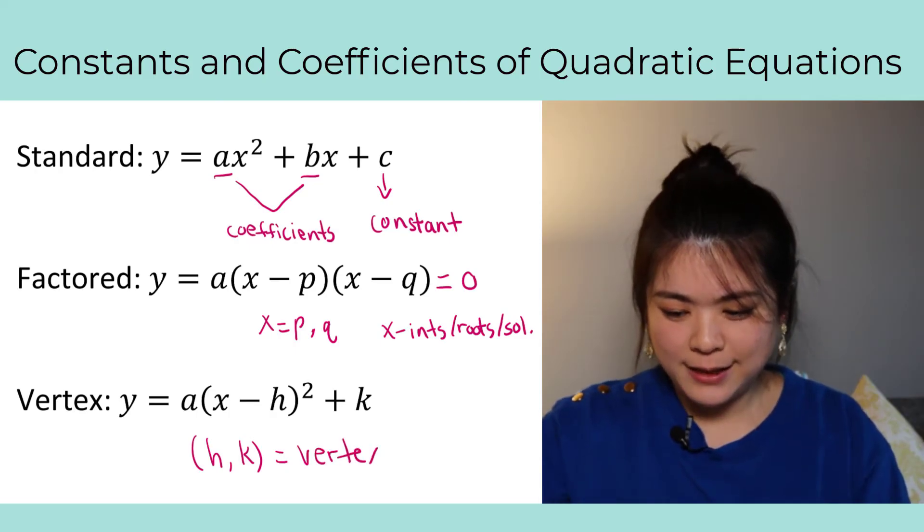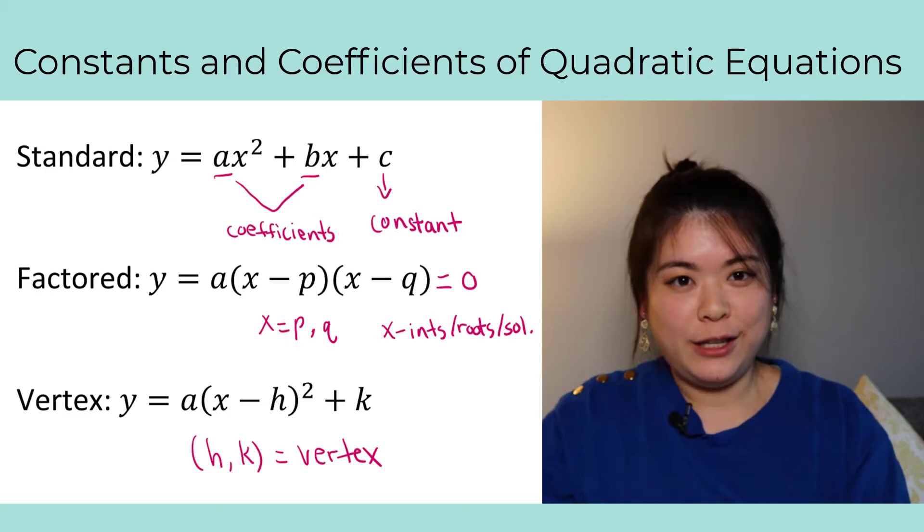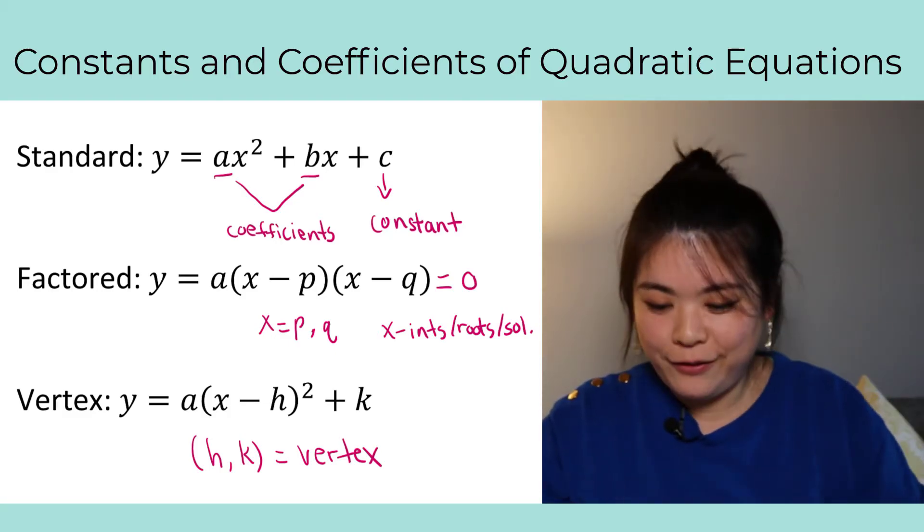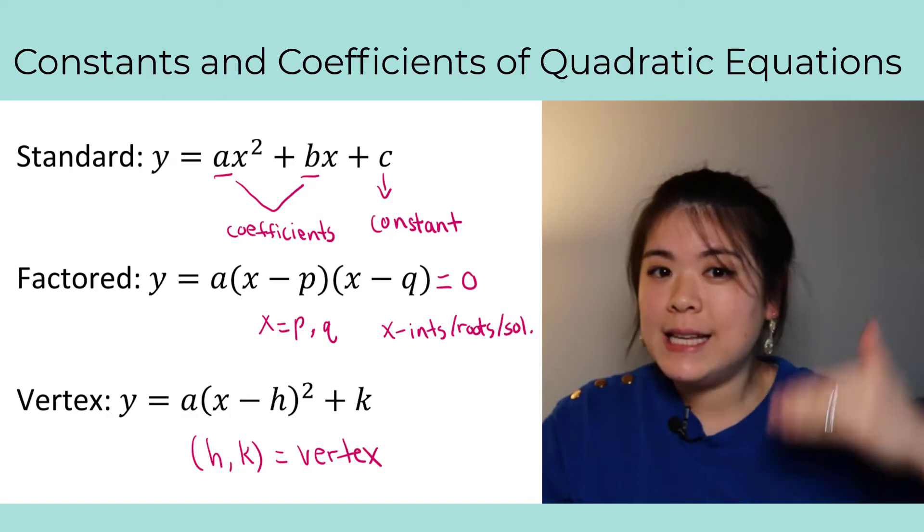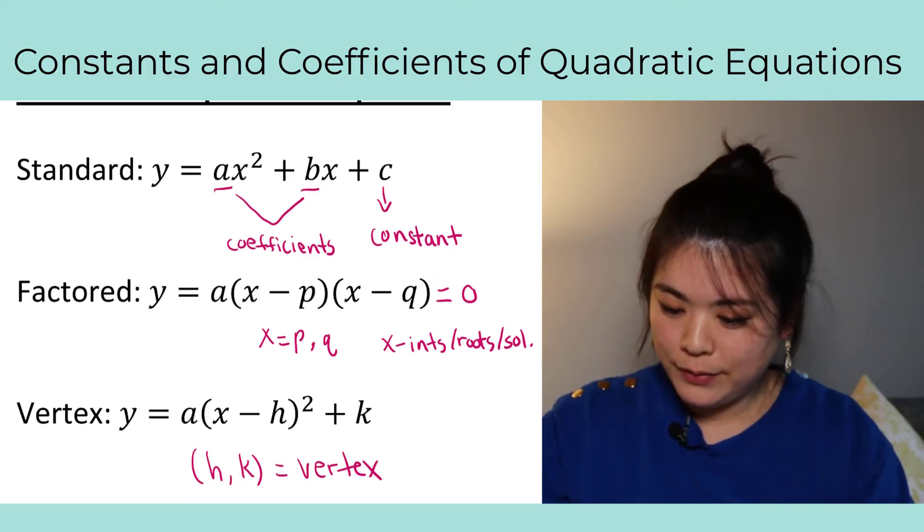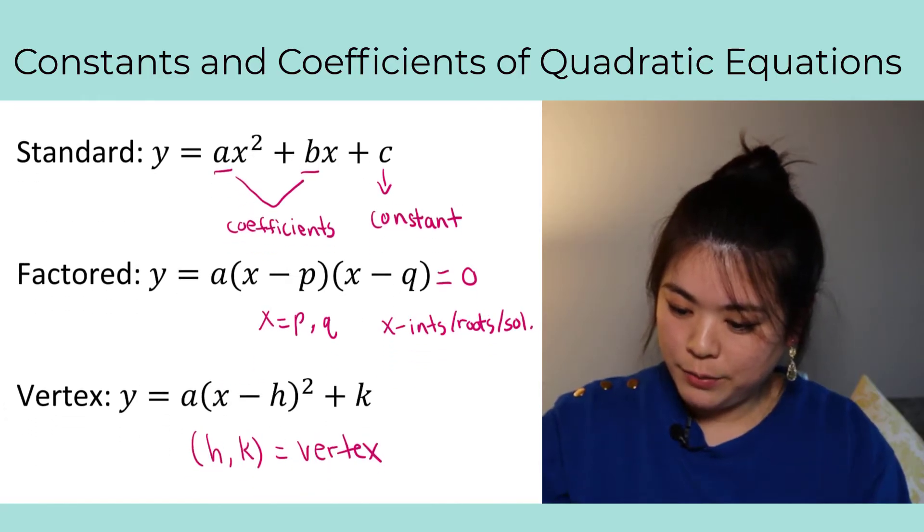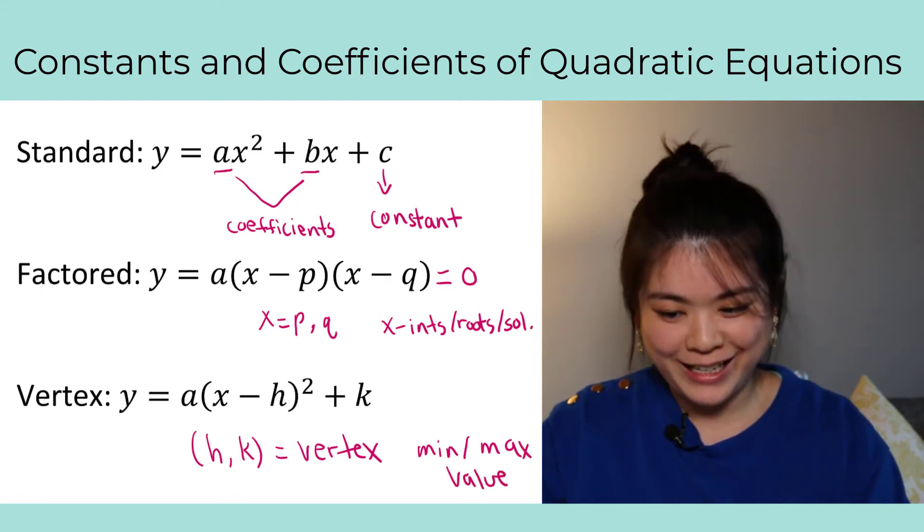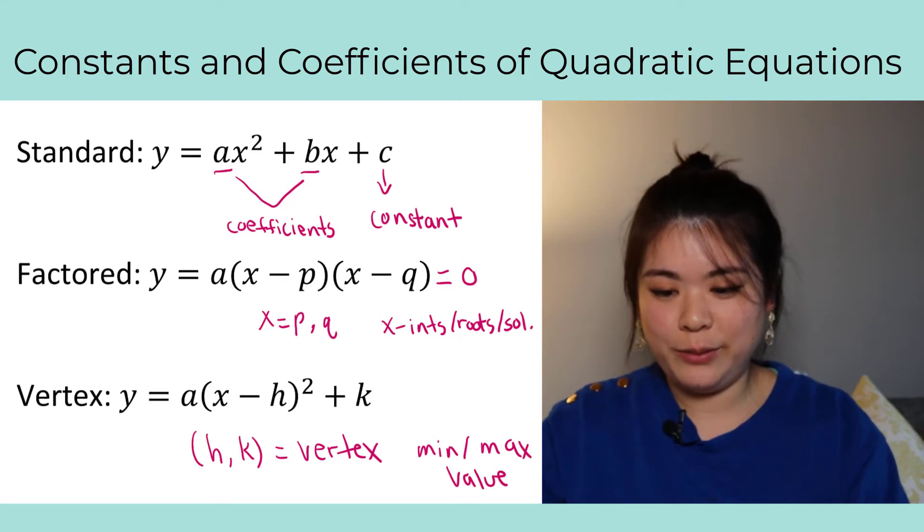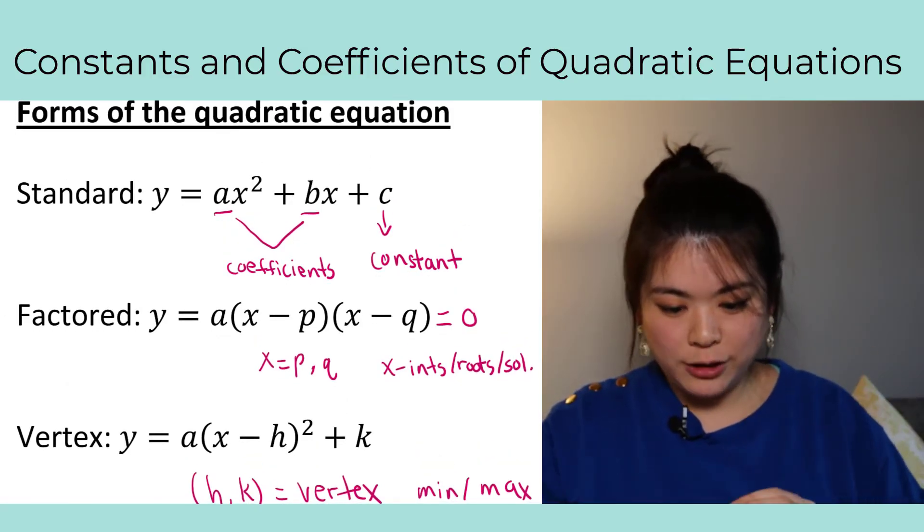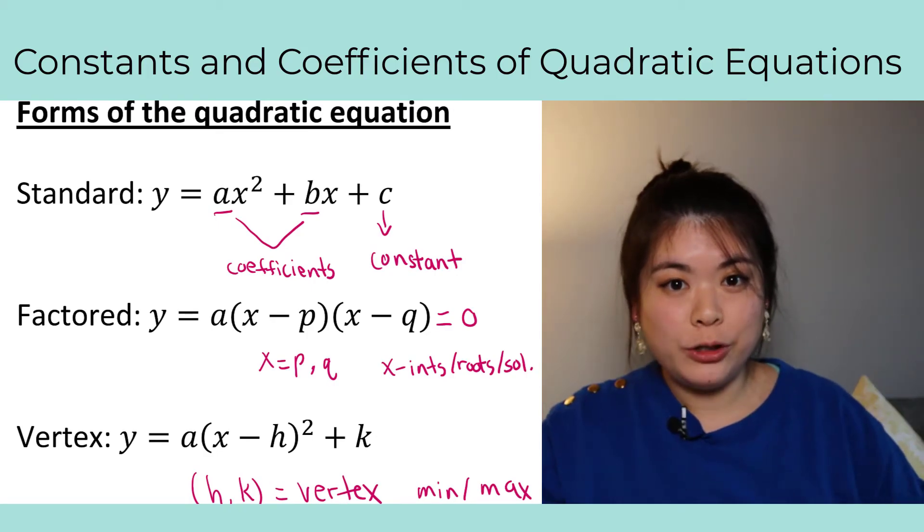Next, and last but not least, vertex form. This is probably the most complicated one of the three, but it's so important that you commit this one to memory. The vertex form is y equals a times parentheses x minus h squared plus k, where h comma k is your vertex. Now what is the vertex? If you have a parabola, it's either going to be an upward smiley face or a downward frowny face. The vertex is the highest or lowest point, aka the minimum or maximum value of your quadratic.